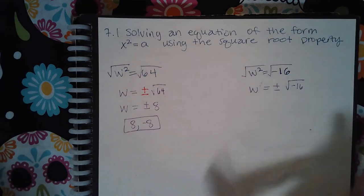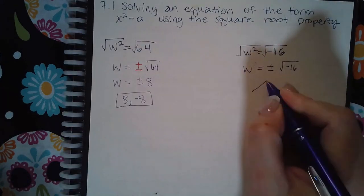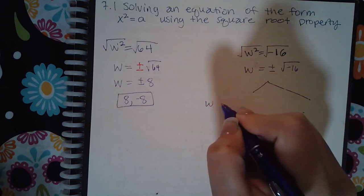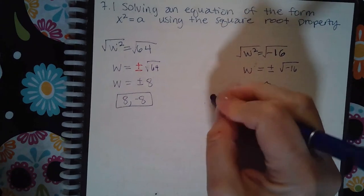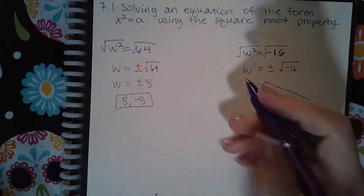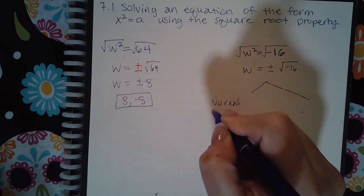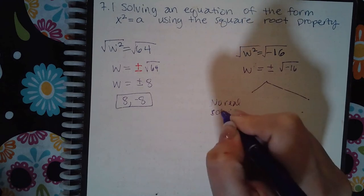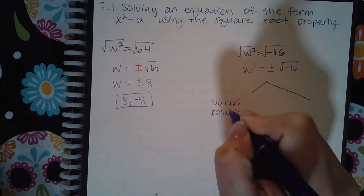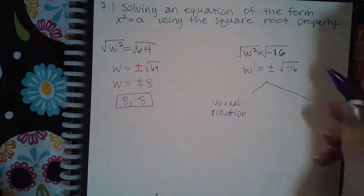you can have two different kinds of answers. One answer you can have is no real solution because you cannot take the square root of a negative. Or if they do allow you to enter complex numbers, then you could